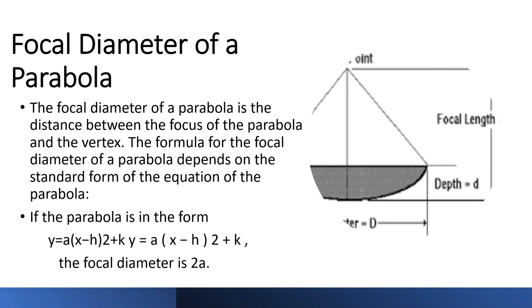The focal diameter of a parabola is the distance between the focus of the parabola and the vertex. The formula for the focal diameter of a parabola depends on the standard form of the equation of the parabola. If the parabola is in the form Y = A(X - H)² + K, the focal diameter is 2A.